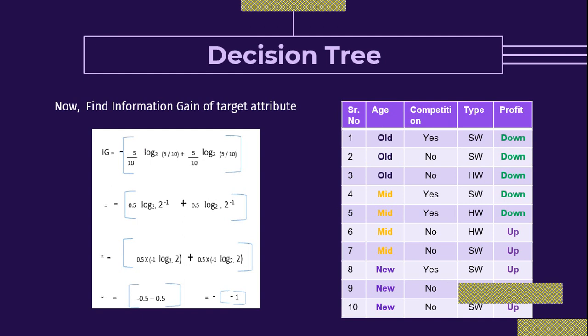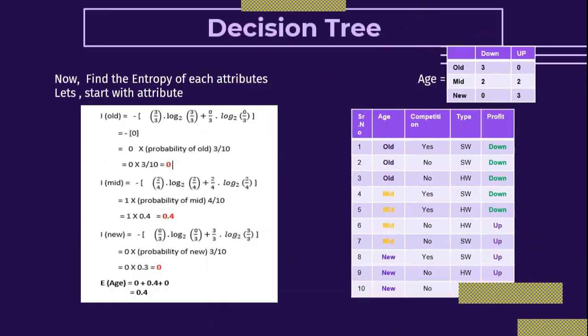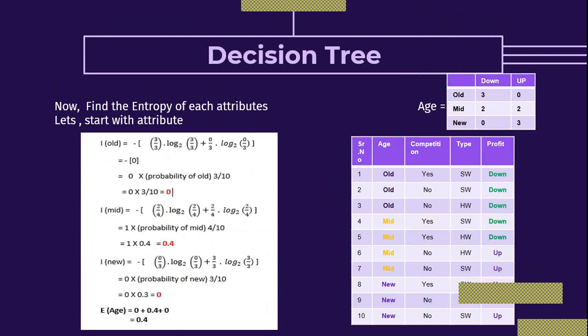So this is the first step to find the information gain of the target attribute profit. In the next step you have to find the entropy of each attribute. While finding the entropy of each attribute you have to create a small table. Here I am considering the first attribute, age. The second is competition and the third is type.